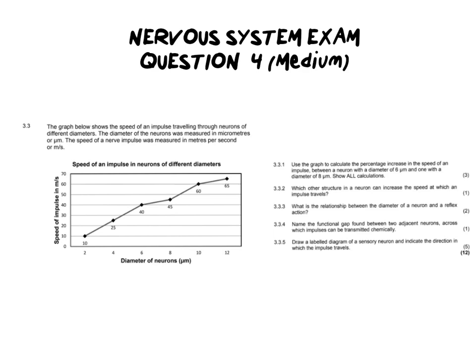It says the graph below shows the speed of an impulse traveling through neurons of different diameters, diameters meaning widths. The diameter of the neuron was measured in micrometers and the speed of the impulse of a nerve was measured in meters per second. So we have a graph there showing us what's happening and I think it's important to take a quick moment here to just break down what we're looking at.